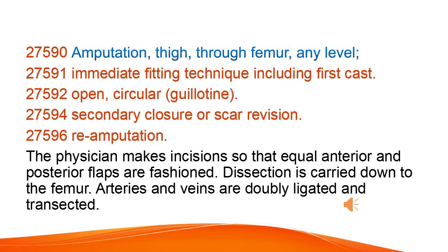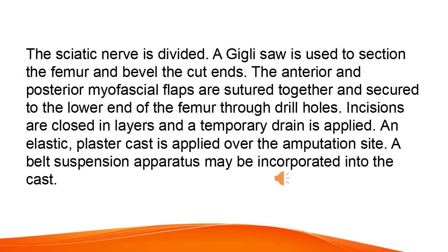Amputation of the thigh through the femur at any level — with immediate fitting technique including first cast, open circular guillotine, secondary closure or scar revision, and re-amputation. The physician makes incisions so that equal anterior and posterior flaps are fashioned. Dissection is carried down to the femur. Arteries and veins are doubly ligated and transected. The sciatic nerve is divided. A Gigli saw is used to section the femur and bevel the cut ends. The anterior and posterior myofascial flaps are sutured together and secured to the lower end of the femur through drill holes. Incisions are closed in layers and a temporary drain is applied. An elastic plaster cast is applied over the amputation site, and a belt suspension apparatus may be incorporated into the cast.